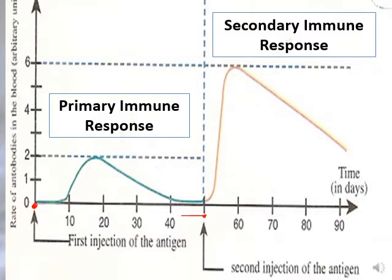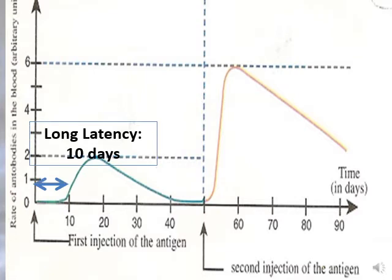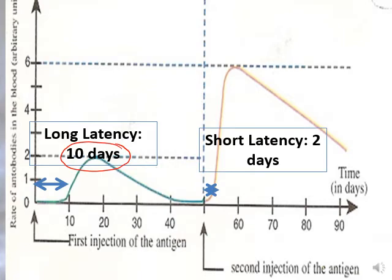The latency is the time needed for the immune response to start. In the primary immune response, the latency is about 10 days. In the secondary immune response, it takes only two to three days to start. So the secondary immune response is faster — it has a shorter latency period.